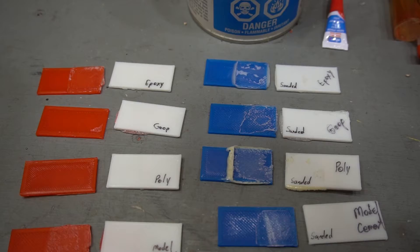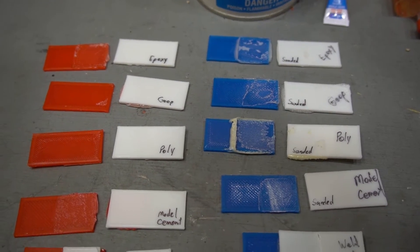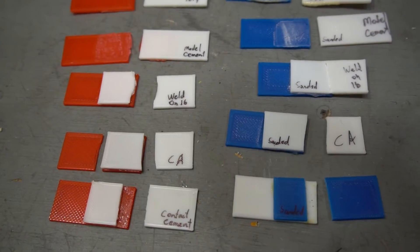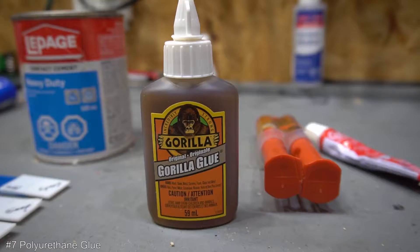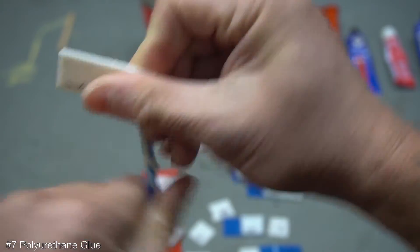Okay, wow. I was not expecting results like that. So I'll rank worst to best based on my limited sample size of testing. Coming in at number seven, Polyurethane glue. I barely had to apply any pressure and the glue failed immediately. Both sanded and unsanded pieces.